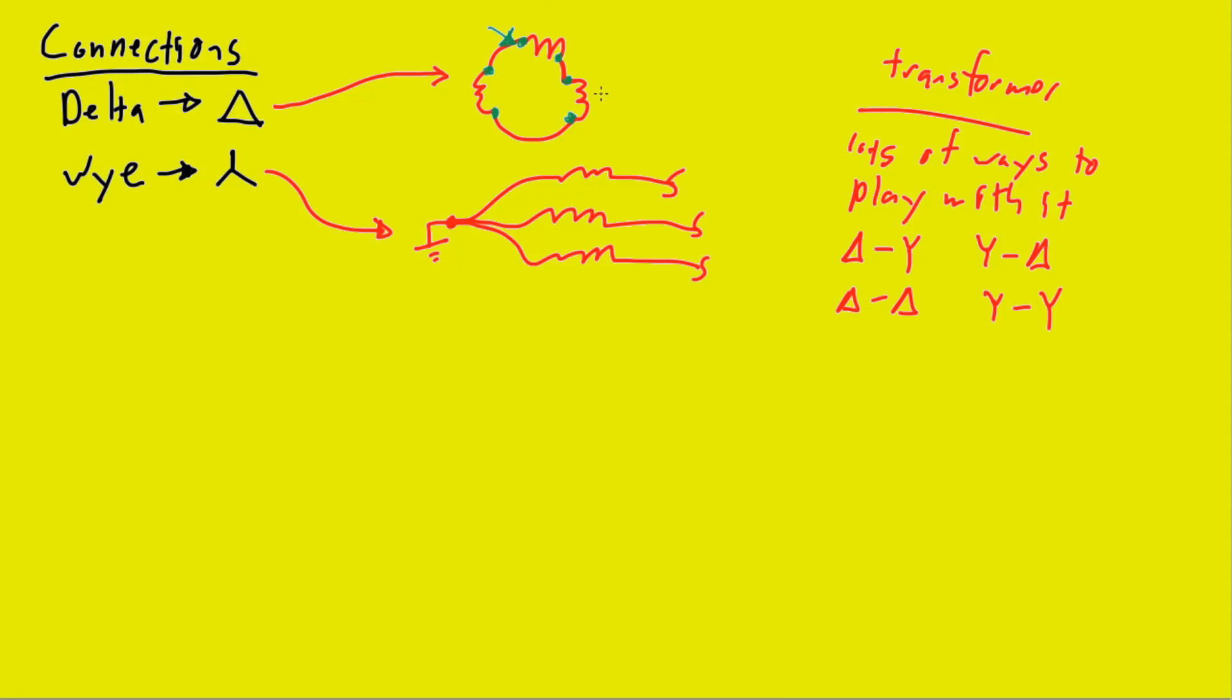For example, I could have drawn this delta connection up here in any number of different ways. So, I could have drawn it like maybe this, or any other sort of way.